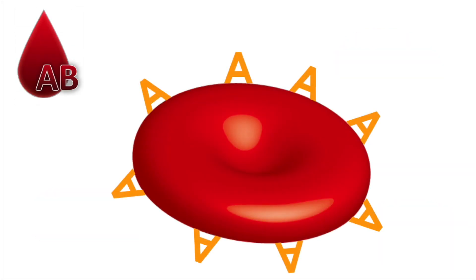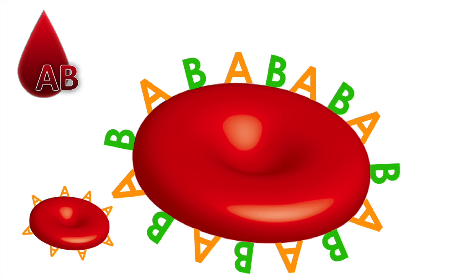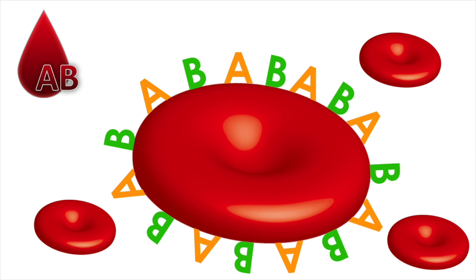AB blood has both the A antigen and the B antigen on its cell membrane. If it were exposed to A blood, it would not elicit an immune response because it recognizes the A antigen. Similarly, if AB blood were exposed to B blood, it would not cause an immune response because it recognizes the B antigens. If AB blood were exposed to O blood, it also would not elicit an immune response because there are no antigens on O blood cell membranes to produce antibodies for.